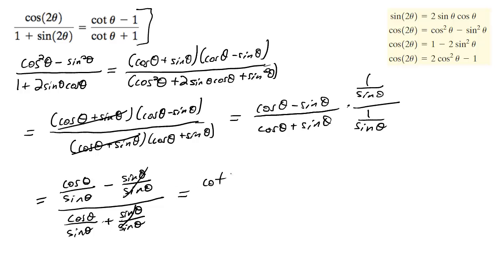So this simply becomes cotangent theta minus 1 over cotangent theta plus 1. That's it, we solved it.